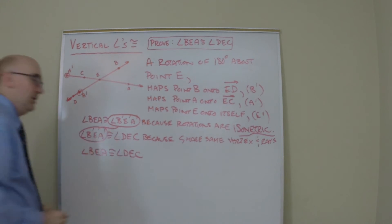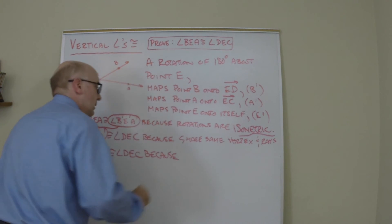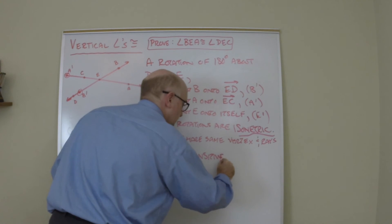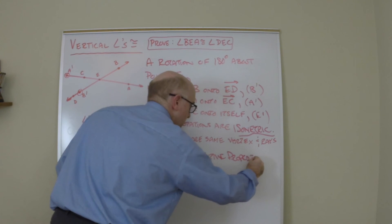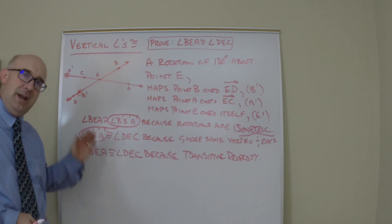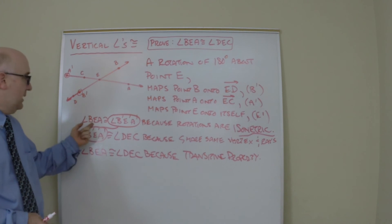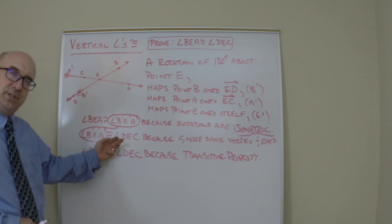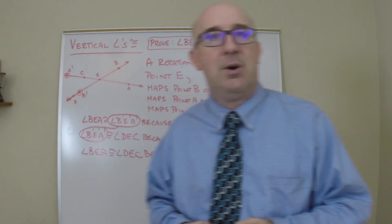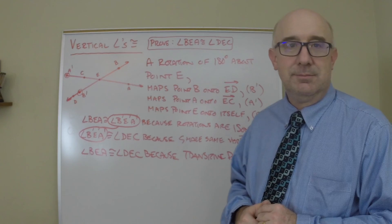These must be congruent because of the transitive property of equality. The transitive property links things equal to each other: A equals B, B equals C, therefore A equals C. This equals its image, the image equals this angle, so these two must be equal. This is a beautiful, fairly simple, logically laid out proof that vertical angles must be equal.